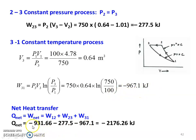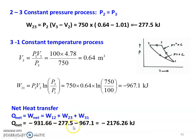For a cyclic process, net heat transfer equals net work transfer: Q_net = W_net = W12 + W23 + W31 = −931.66 + (−277.5) + (−967.1) = −2176.26 kJ. This is the net heat transfer for the process.